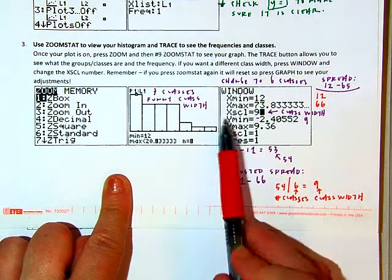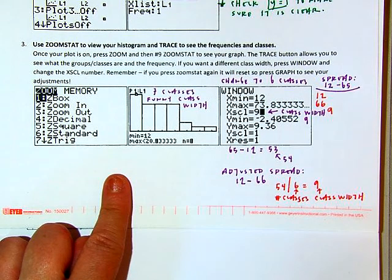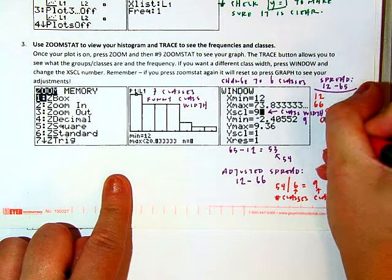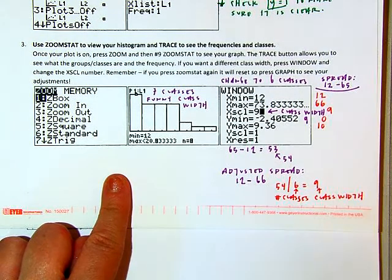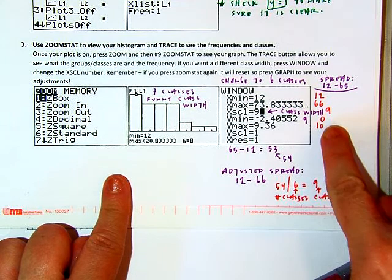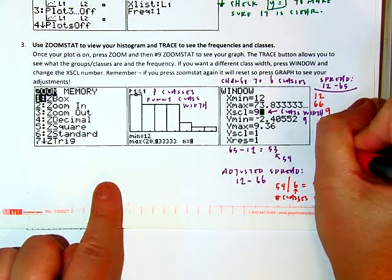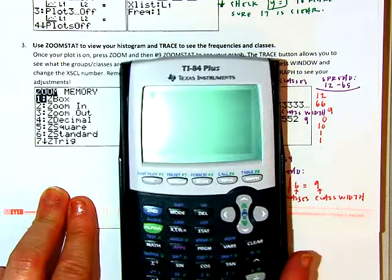So my x scale is my class width. We're saying, let's make it nine. Let's change it from what it was originally. Let's make it nine. The y min, like I said, I can't have a negative amount of data. I could have zero data. So I should always start at zero. My y max, I usually start at 10. And then I fiddle with it to fix it if I see something cut off or if I see too much empty space at the top. So I usually adjust that 10. But it's a good starting point. Your y scale stays at one. Your x res will always stay at one. So let me go back to my calculator and adjust it.